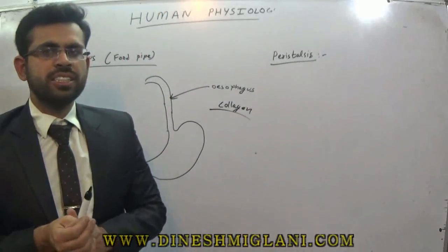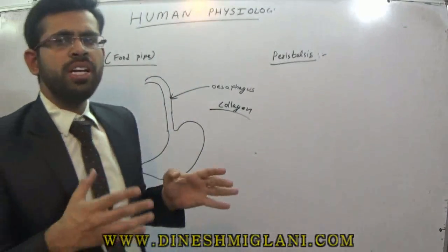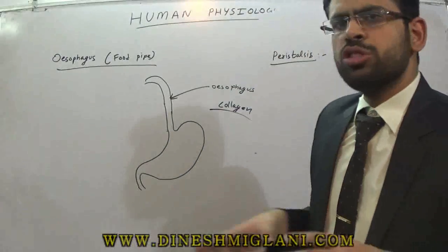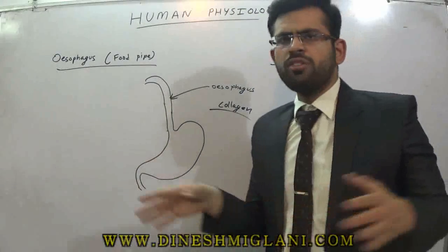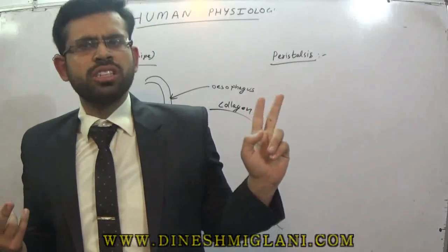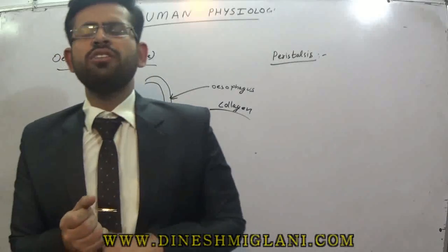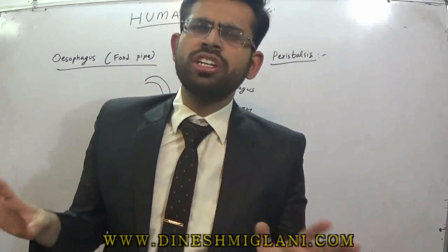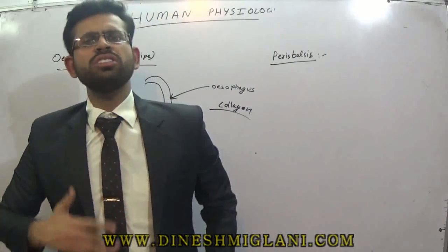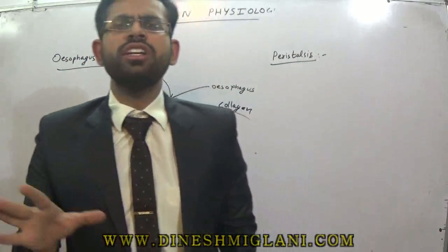So what is peristalsis? Look — in our body, our whole alimentary canal is made of smooth muscles, which are involuntary muscles. We have two types of muscles: skeletal and non-skeletal. Skeletal muscles are those which are under our control. Non-skeletal muscles are those which are not in our control — they are involuntary, they do their own work. All of our internal organs are made of involuntary muscles.